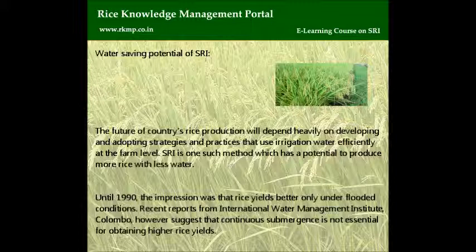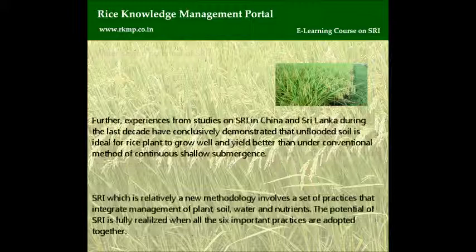Water Saving Potential of SRI: The future of countries' rice production will depend heavily on developing and adopting strategies and practices that use irrigation water efficiently at the farm level. SRI is one such method which has the potential to produce more rice with less water. Until 1990, the impression was that rice yields better only under flooded conditions. Recent reports from the International Water Management Institute, Colombo, however, suggest that continuous submergence is not essential for obtaining higher rice yields.